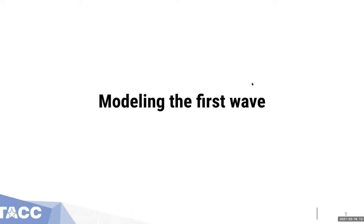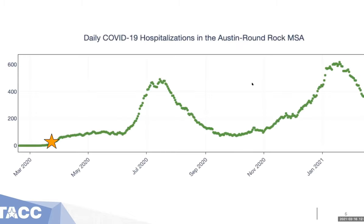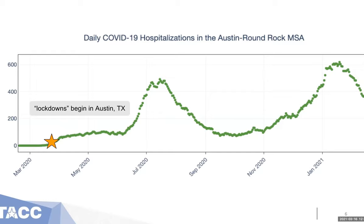Let's move on to talk about modeling the first wave. To orient you in time, this is a time series of COVID-19 hospitalizations in Austin — the Austin Round Rock MSA, Metropolitan Statistical Area in Central Texas — from March 2020 up through more or less present day. This is about the time that lockdowns began, when we started talking about these big changes in behavior to mitigate the transmission of COVID-19 and flatten the curve.